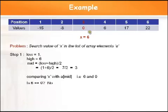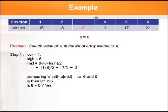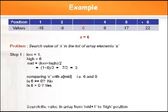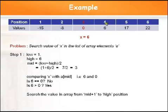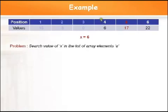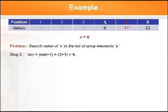Is 6 equal to A[3]? No. Is 6 greater than A[3]? Yes. So the element may be found only in the second half of the array. We continue searching from mid+1 to high, that is from position 4 to 6. The lower boundary now becomes 4 and the higher boundary remains 6.